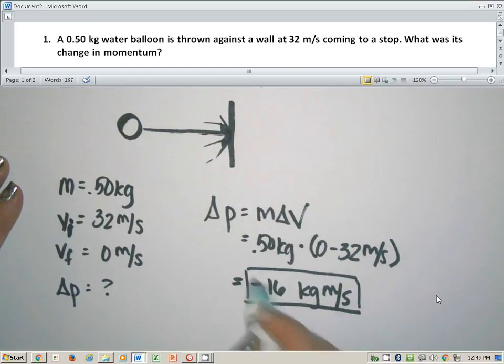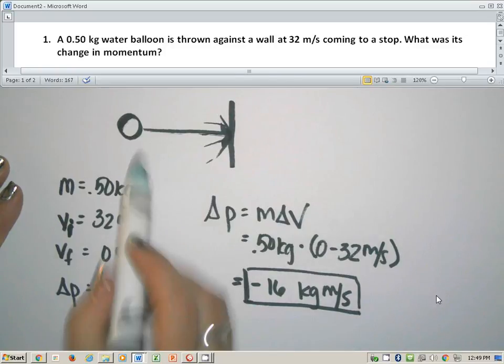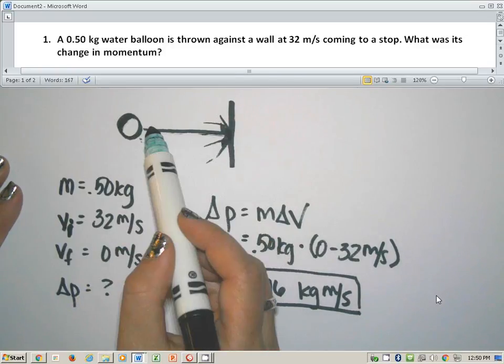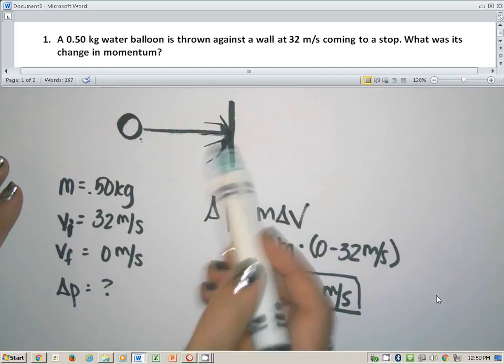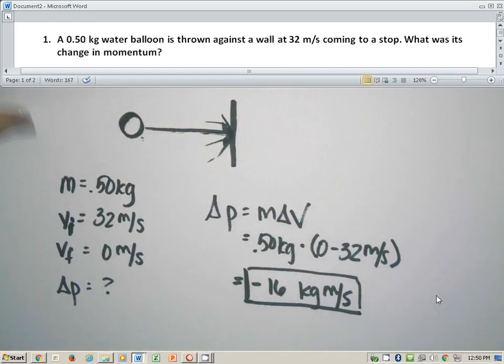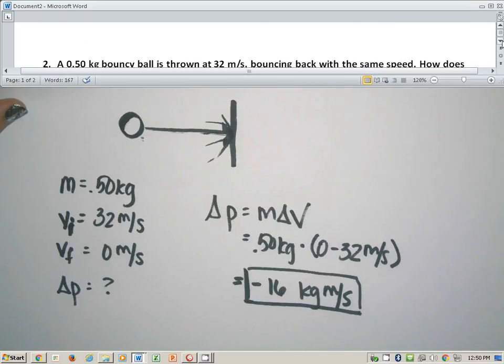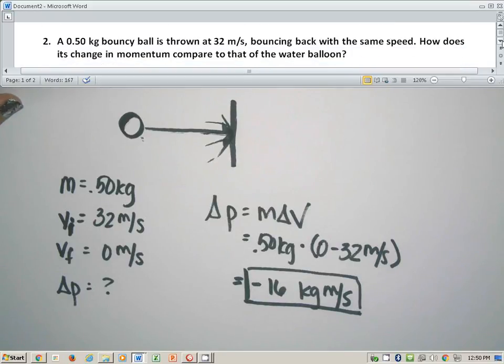It's negative because the change in momentum when it hit was to send it back the other direction. So the momentum rebounded basically to the left. Now I have another variation of this problem, which is this time we use a bouncy ball.